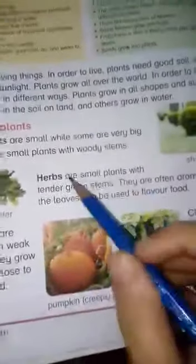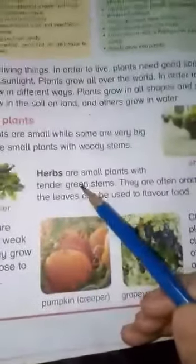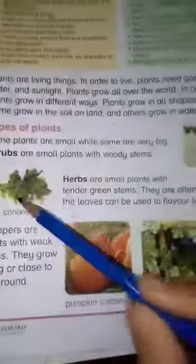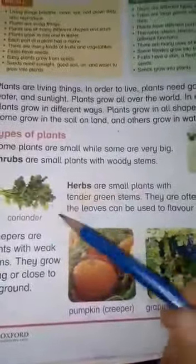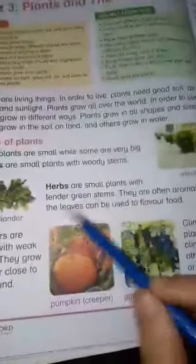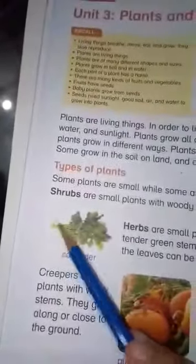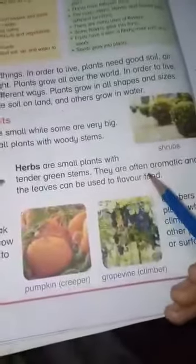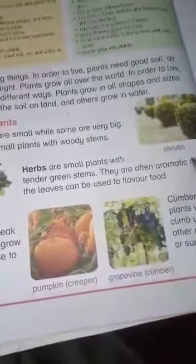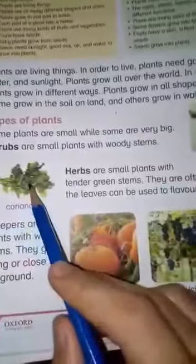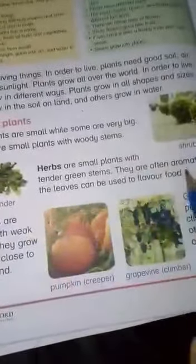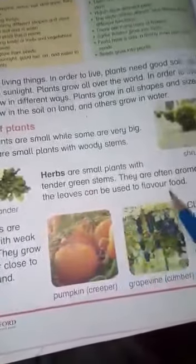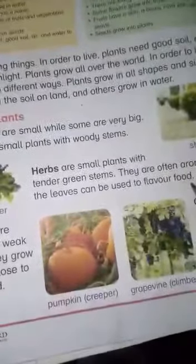Herbs are small plants that are very small and don't have very big stems — like coriander or podina (mint). These are all herbs with tender green stems. They grow and are often aromatic. The leaves can be used to flavor food, and mostly these plants are used to flavor food.